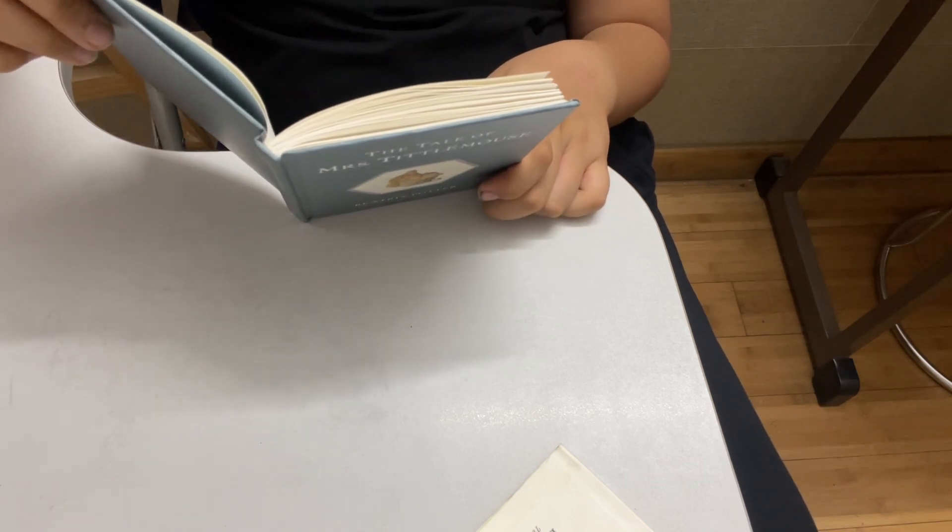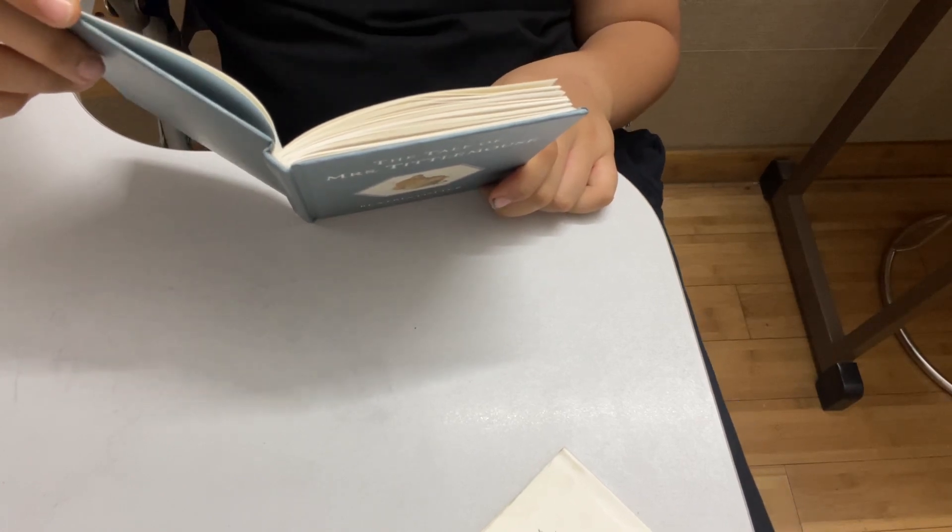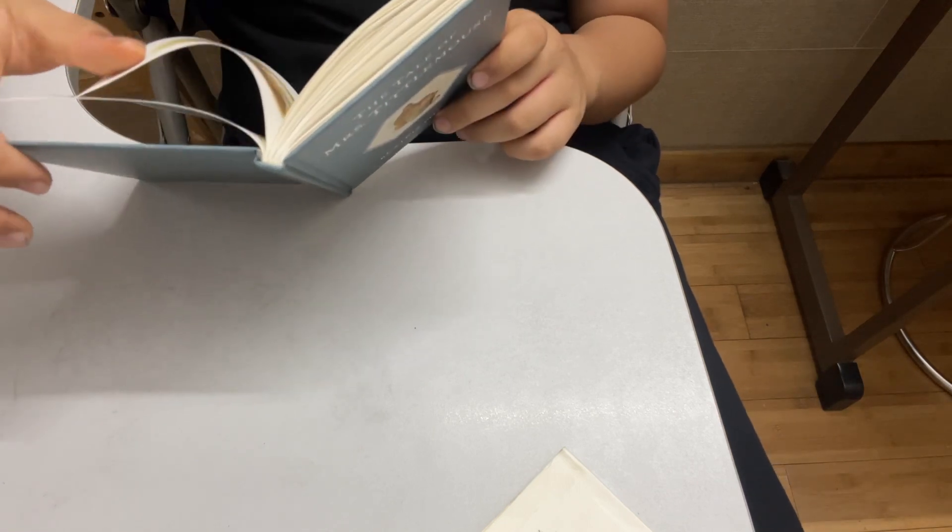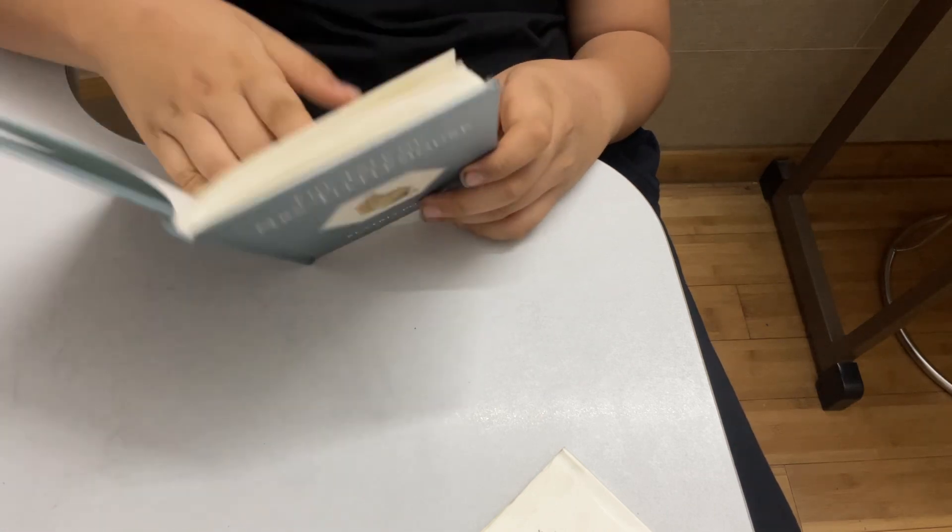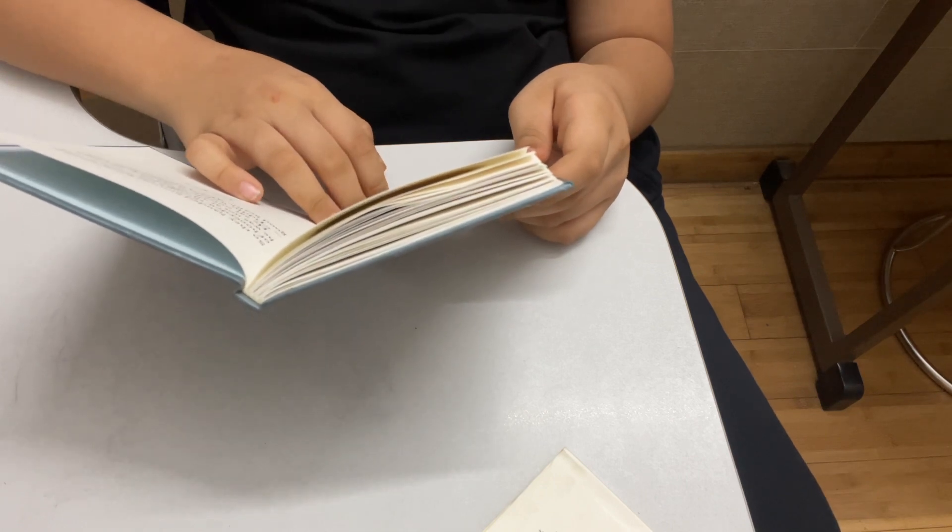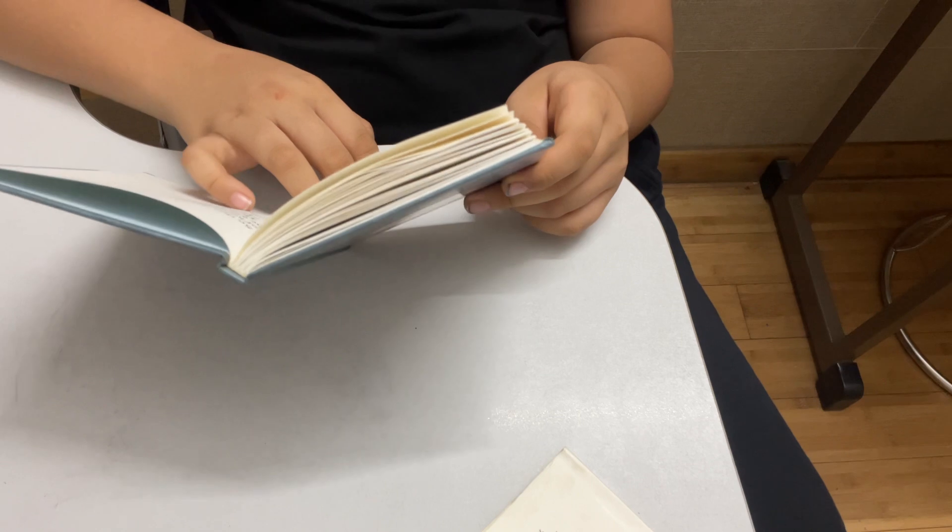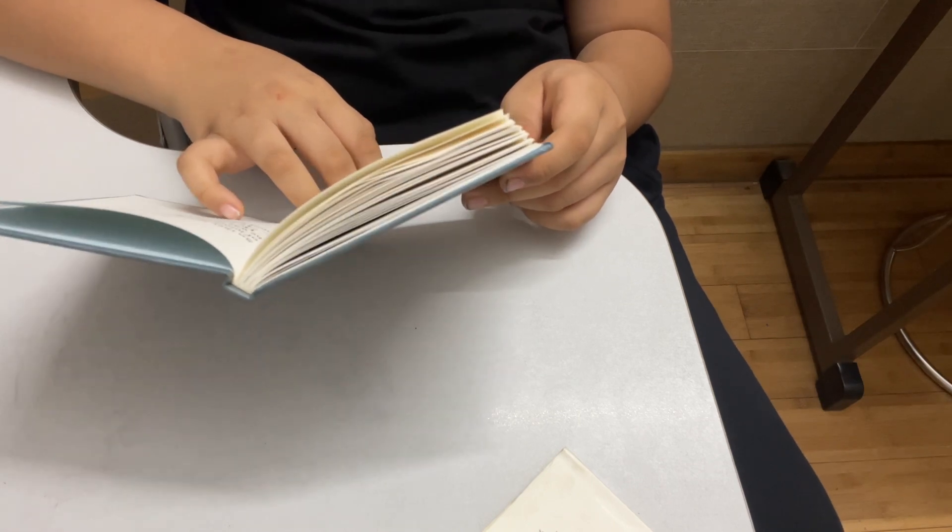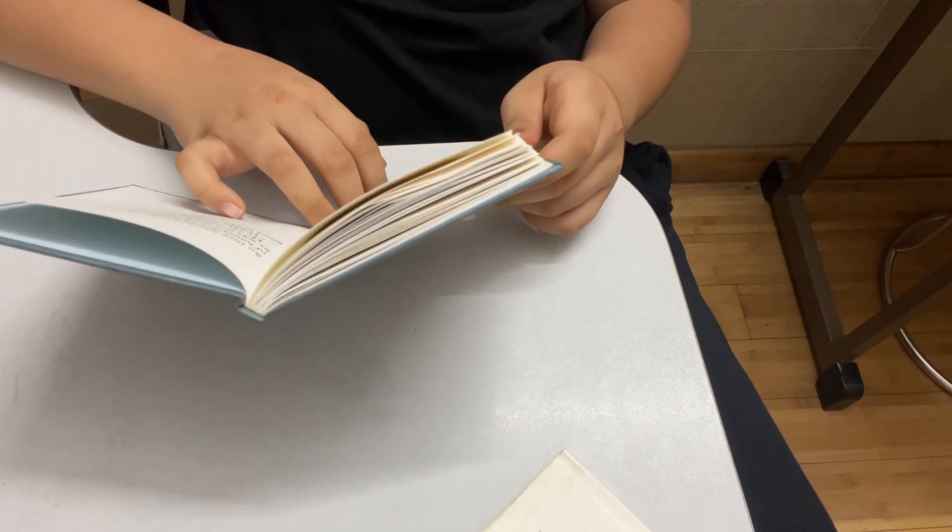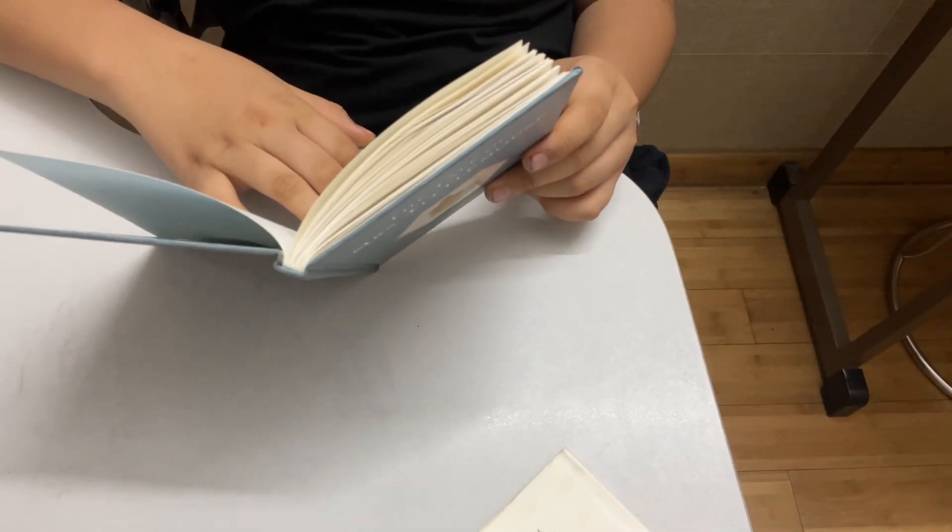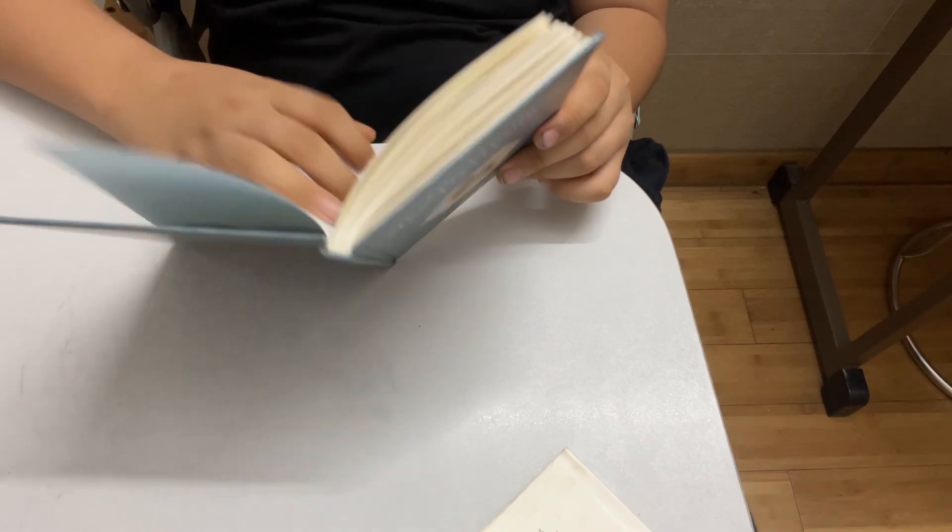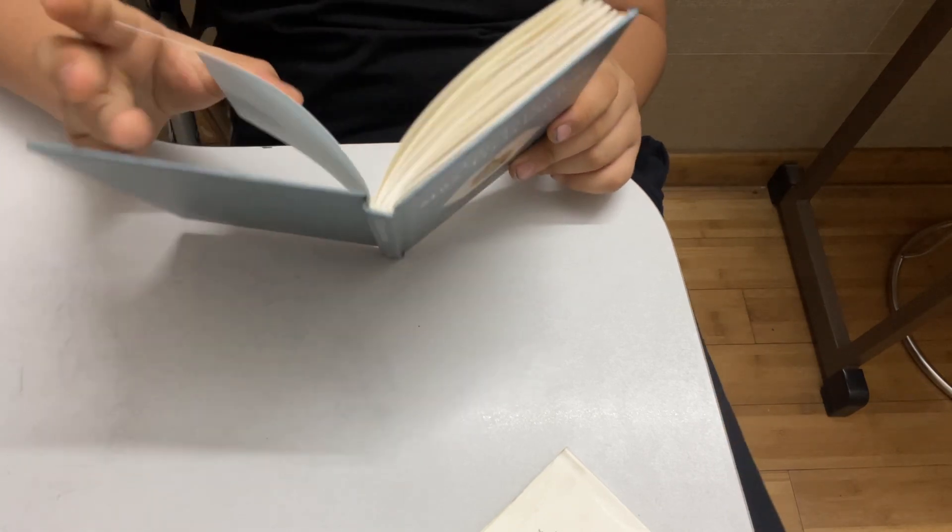When it was all beautifully neat and clean, she gave a party to five other little mice, without Mr. Jackson. He smelled the party and came up the bank, but he could not squeeze in at the door. So they handed him out acorn cupfuls of honeydew through the window. And he was not at all offended. He sat outside in the sun and said, Tiddly, widdly, widdly, your very good health, Mrs. Tittlemouse.